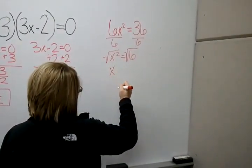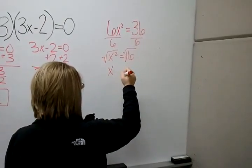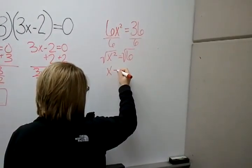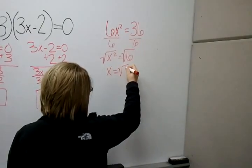So that gives us x by itself which is going to be equal to the square root of 6.